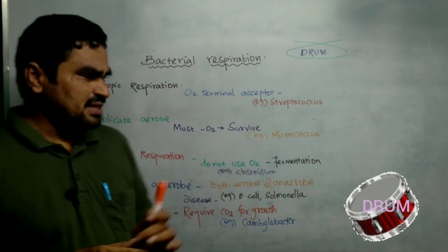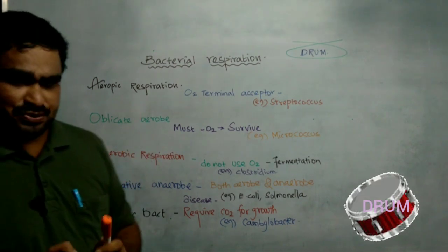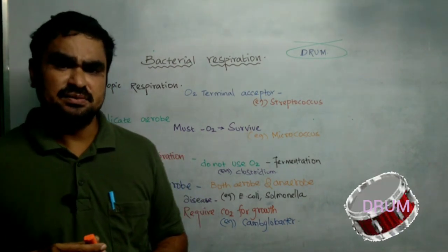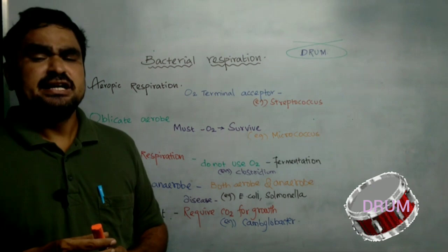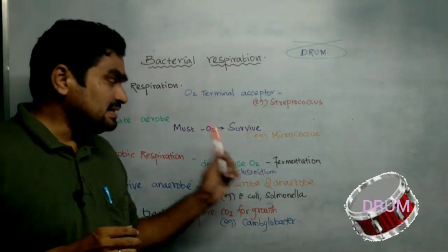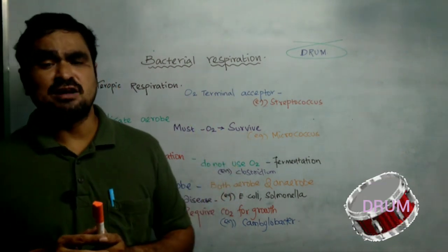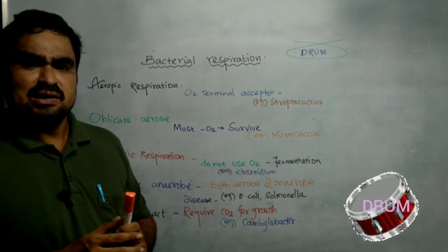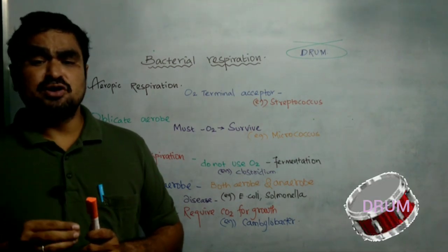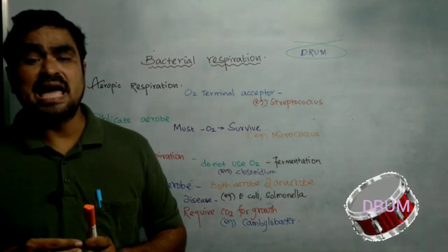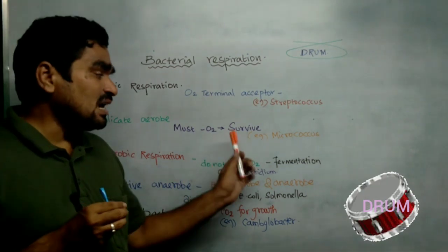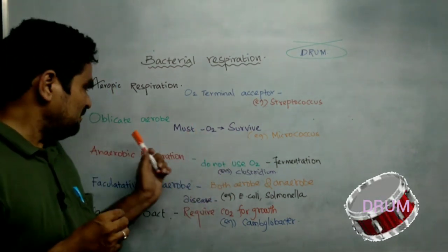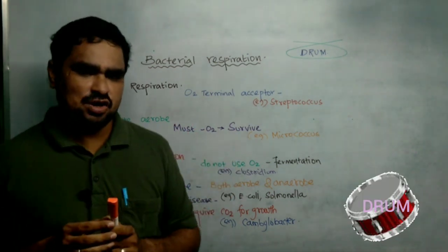The second one is obligate aerobes. In this type of respiration, the bacteria must have oxygen adjacent to them for survival. The bacteria must have oxygen for their survival. An example of obligate aerobes is Micrococcus.